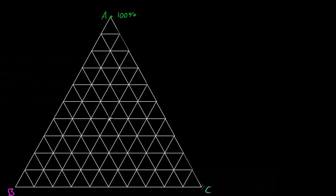If we had a point all the way down here, this would represent 100% C, or a system made up completely of C. And B is the same idea. If we had a point right here, this would be 100% B, or a system made up entirely of B.